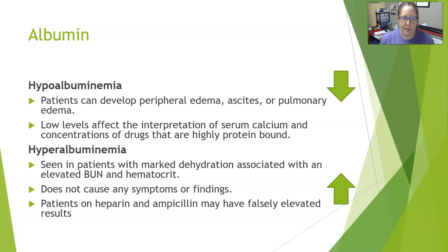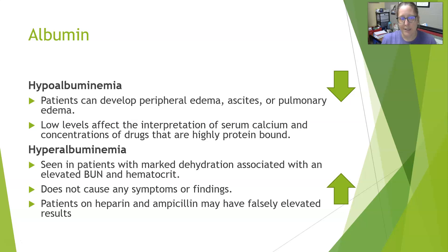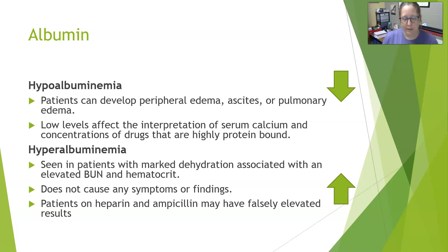Hyperalbuminemia — high levels of albumin in the blood — is a much rarer finding. It is seen in patients who have marked dehydration and is always associated with an elevated BUN and hematocrit, which are all reflective of severe dehydration. It's not that the liver is producing more albumin; it's producing the same amount, but a loss of water makes it more concentrated in the blood, appearing to be increased. If you see high albumin levels, you pretty much need to think marked dehydration.